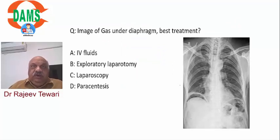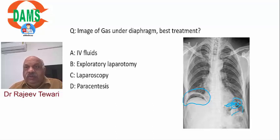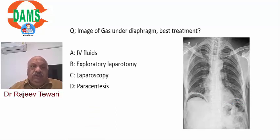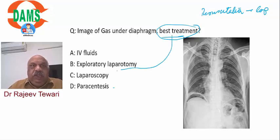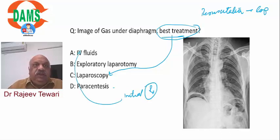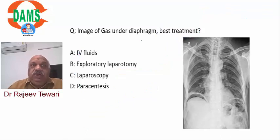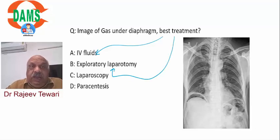Question two: image of gas under the diaphragm and its treatment. For gas under the diaphragm (pneumoperitoneum), look at the right side only, not the left - the left side has fundal gas shadow and splenic flexure air which creates confusion. There are three key points: the best treatment is resuscitation followed by laparotomy. If that option is not available, the answer is laparotomy. If the question asks for initial treatment, the answer is IV fluid.